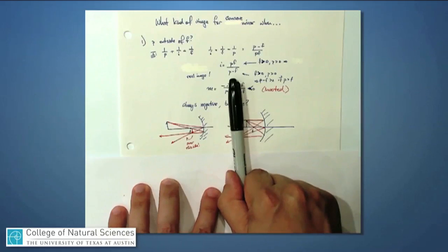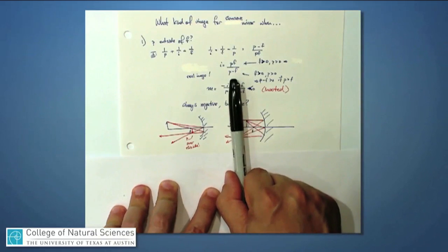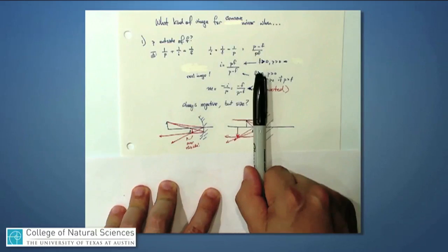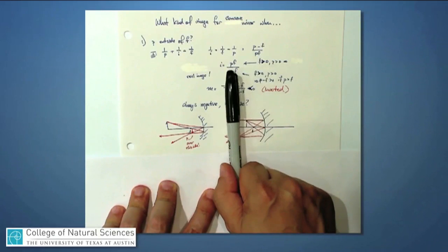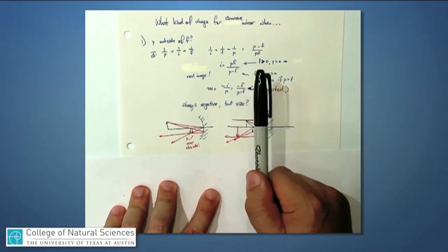And we know some things about i even before we get too far. If this is a concave mirror, then the focal length is greater than zero. And p is always greater than zero, so the numerator is always greater than zero.